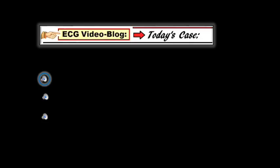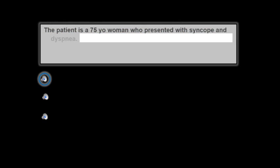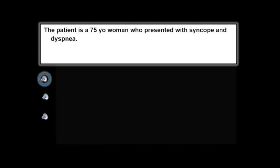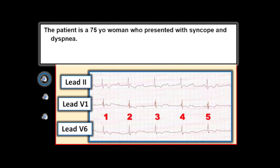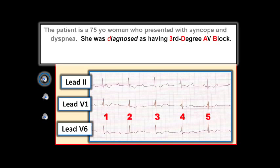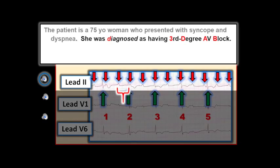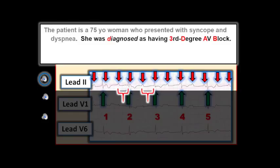Today's case was sent to me by Dr. Jender Stroh from Liberic in the Czech Republic. The patient is a 75-year-old woman who presented to the emergency department with syncope and shortness of breath. On the basis of the simultaneously recorded three-lead rhythm strip shown here, she was diagnosed as being in complete AV block, because there is a regular or fairly regular atrial rate (red arrows), a regular ventricular rate (green arrows), but no apparent relationship between P-waves and neighboring QRS complexes, as suggested by the constantly changing PR interval before each QRS. This indicates AV dissociation.